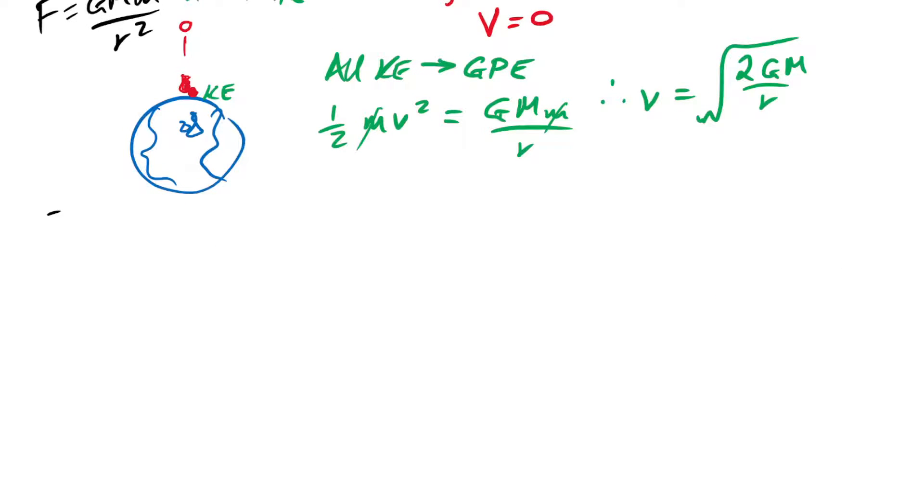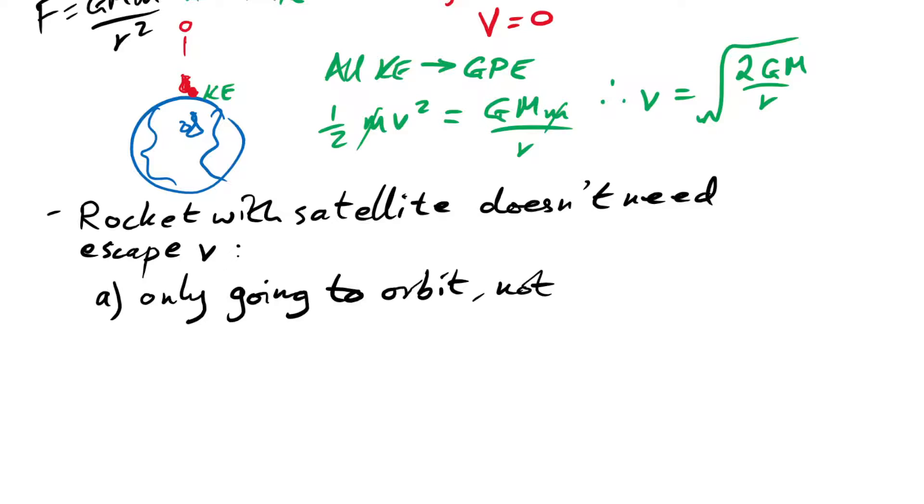There's a couple of things we need to talk about. Let's think about say a rocket carrying a satellite and it's taking the satellite up to orbit. Doesn't need to reach escape velocity for two reasons. A, only going to orbit, not escaping field.